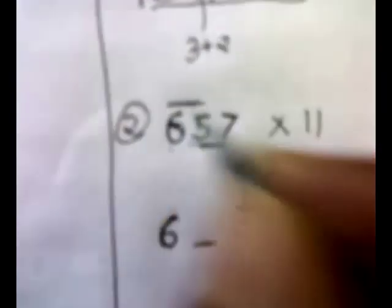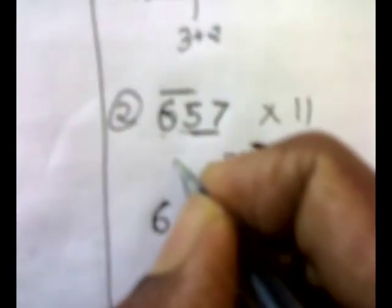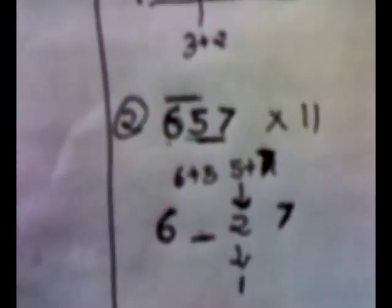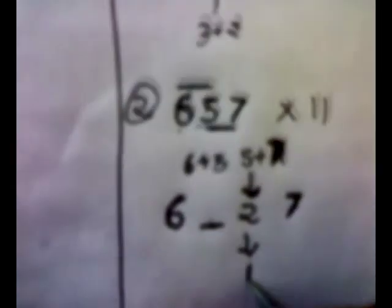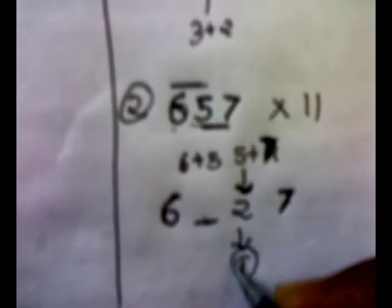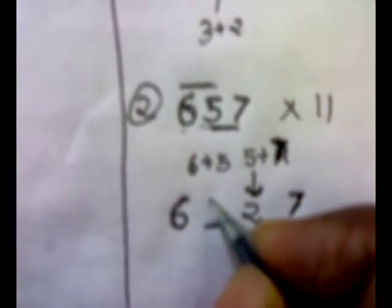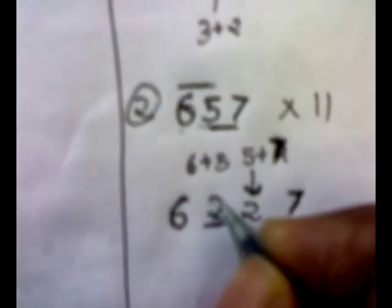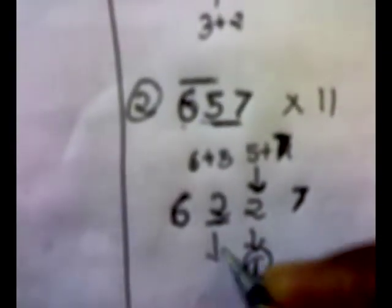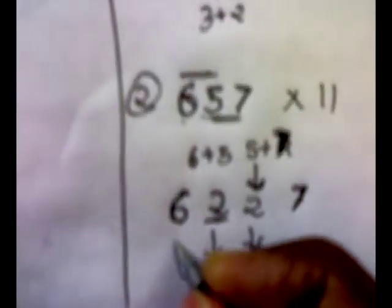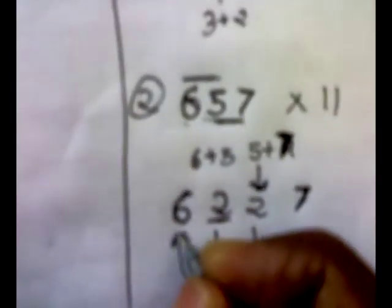6 plus 5 will be 11, and 11 plus this carry, that will become 12. So again we will put 2, and we generated 1 carry. We will add this carry to this 6.